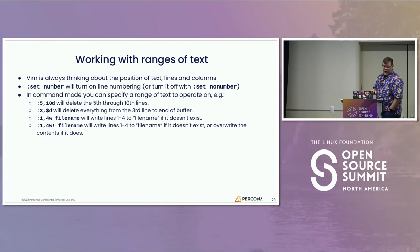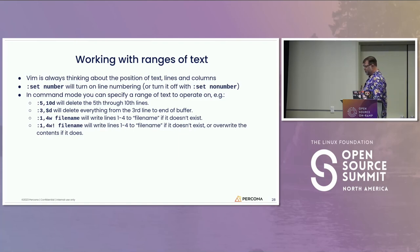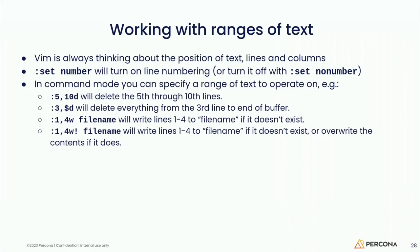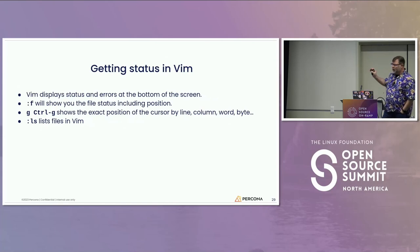Working with ranges of text — if you want to see line numbers in VIM, colon set number will give you all the numbers; set no number turns it off. You can delete a range, like lines 5 through 10. If you want to write just a few lines to a file, give it a range W with a file name and it'll write those lines. This is really handy if you have a log file open and need to send support just ten specific lines.